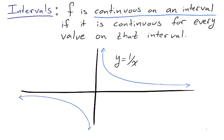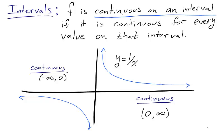For example, take the graph of y equals 1 over x. The function is continuous on the open interval negative infinity to 0. It is also continuous on the open interval 0 to infinity. Another way to say this is that it is continuous on any interval that does not contain 0.